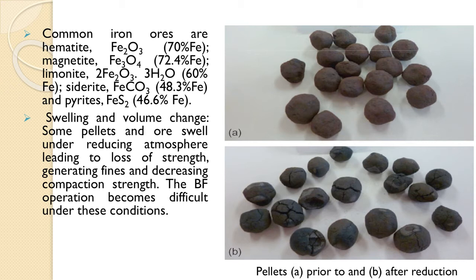In this figure, you can see green pellets and their state after reduction — cracking, disintegration, and swelling of the pellet have occurred, which is not acceptable as blast furnace feed because it will create permeability and other problems. The same is true for lumpy iron ore. Swelling should be minimal, and these are the requirements of iron ore, sinter, or pellets as feed material to the blast furnace.